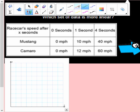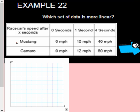Okay, so we have two race cars here. We have the Mustang and the Camaro, and their speed after this many seconds.